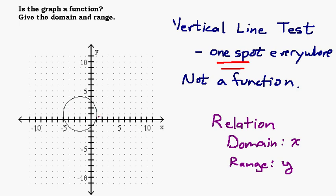So let's look at this here and find our x values. Here's our x axis — we're asking ourselves how far to the left and how far to the right does this graph go. It goes to the left to negative 5, and to the right it looks like 1. So the x's go from negative 5 up to 1, and we could write our domain like that.